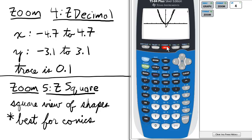Now I'm going to zoom, go back to standard. And now I want to see, let's say, an undistorted view of the graph.